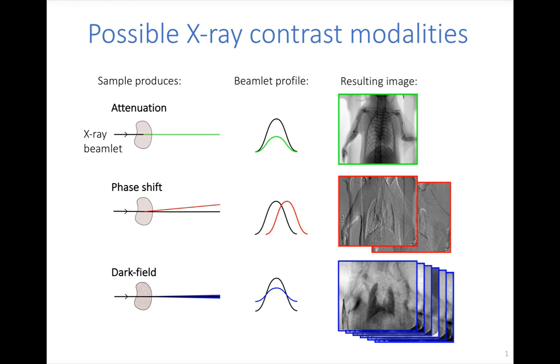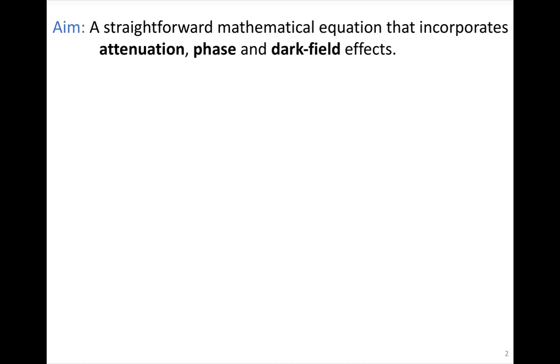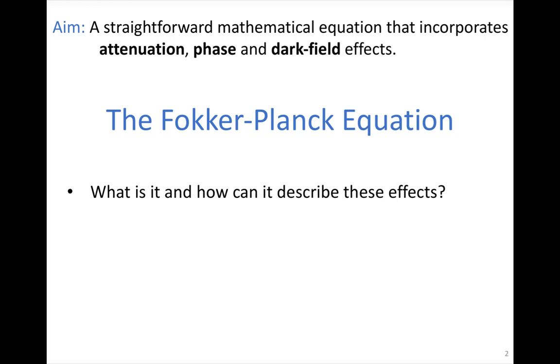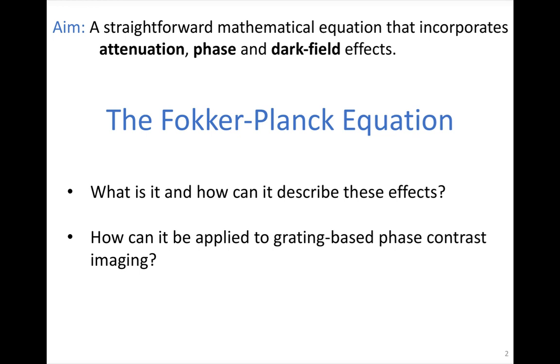The aim of this talk is to present a straightforward mathematical equation that incorporates all three contrast mechanisms — attenuation, phase, and dark field — and the way we propose to do that is via the Fokker-Planck equation. This talk will cover what this equation is, how it describes these effects, and how it can be applied to grating-based phase contrast imaging.